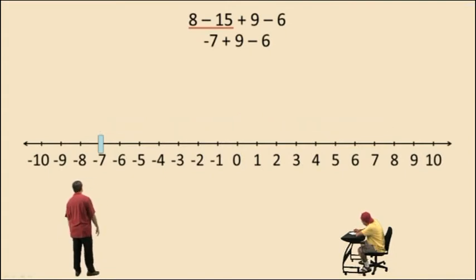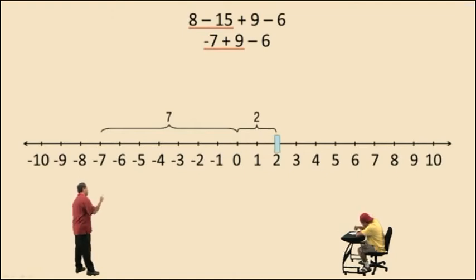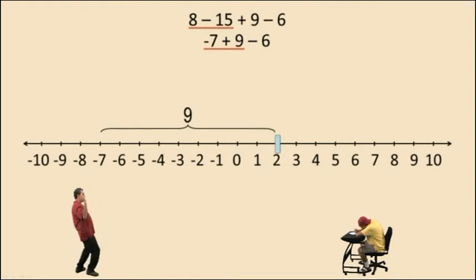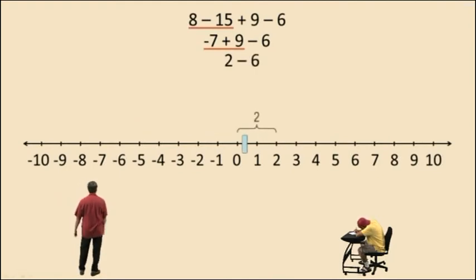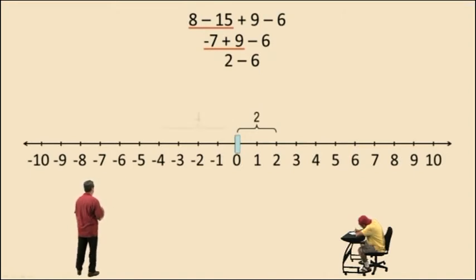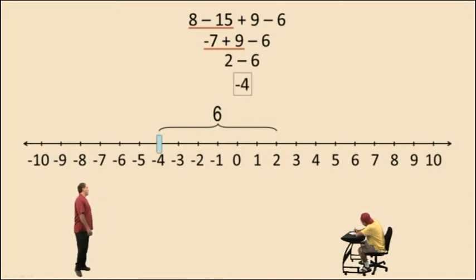Now we do negative 7 plus 9. This time we're going to pass 0 — negative 7 plus 7 is 0, and we have to move 9 units to the right, so we still go 2 more, and we're at positive 2. So negative 7 plus 9 is positive 2. Now we subtract 6 from 2 — moving 2 to the left puts us at 0, and we still have to move 4 more — that puts us at negative 4. And that is our final result.